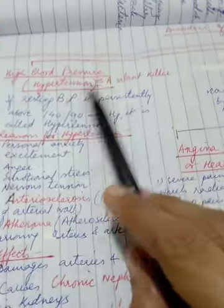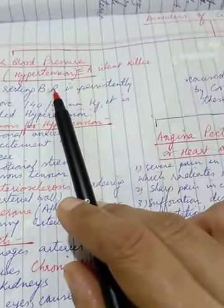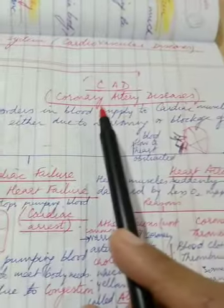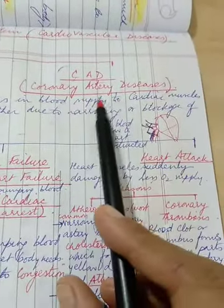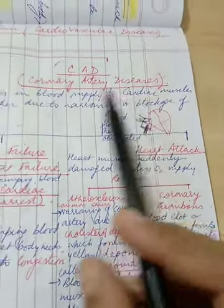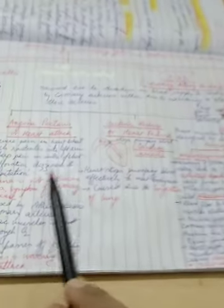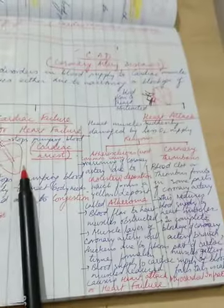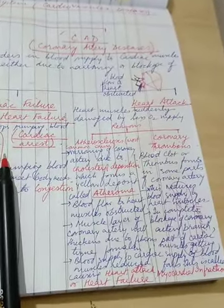Number one, high blood pressure or hypertension and second is CAD or coronary artery diseases. Under this comes three major side headings and they are all in your course children. Angina pectoris, second comes heart failure or cardiac failure and third comes as heart attack. So let us begin with them one by one.